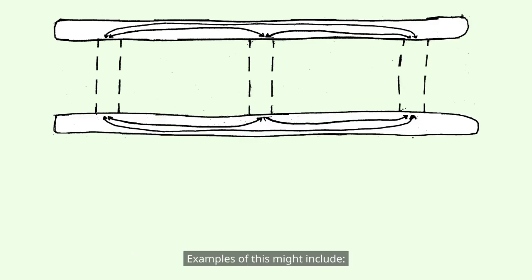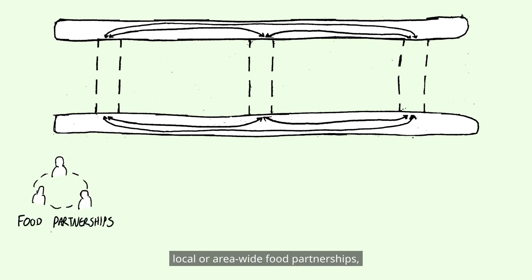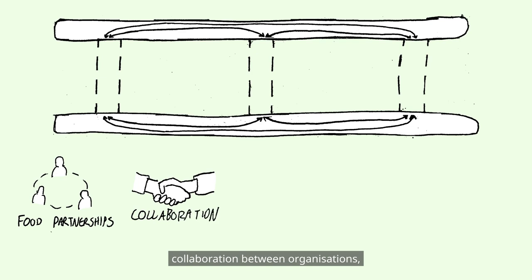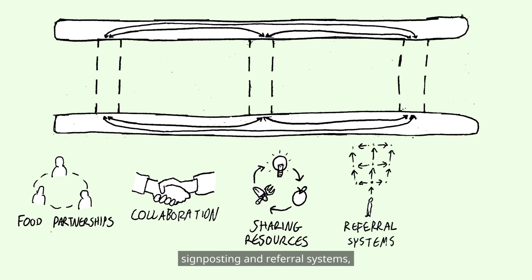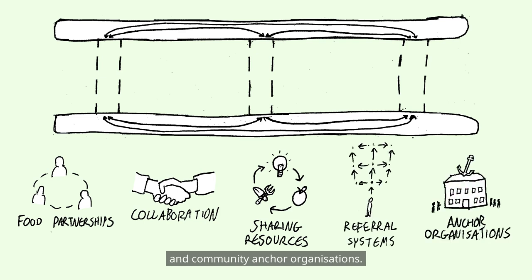Examples of connection might include local or area-wide food partnerships, collaboration between organisations, sharing of resources and information, signposting and referral systems, and community anchor organisations.